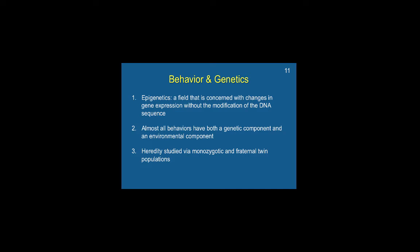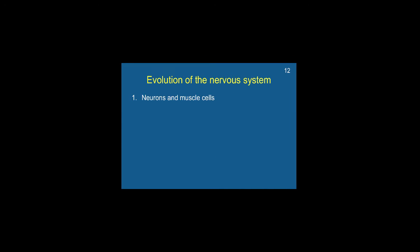Almost all behaviors have both a genetic component and an environmental component. Heredity is typically studied via monozygotic and fraternal twin populations. Monozygotic twins are identical twins, while fraternal twins are born at the same time but are not genetically identical. This allows researchers to understand the impact of environment on things that are genetically identical versus things that are not, giving a range of understanding about the impact of environment on behavior. Now we're going to talk a bit more about how the nervous system evolved.